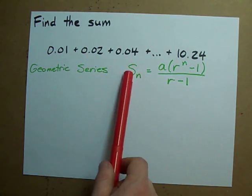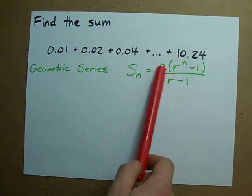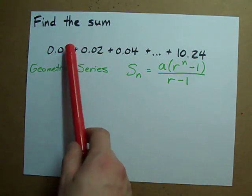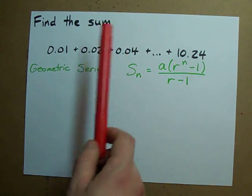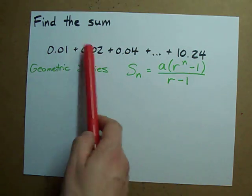There's a special formula for that. S is the sum. A is the first term. R is the common ratio. That's what you're multiplying by to get to the next term. And N is the number of terms that you're adding up together.